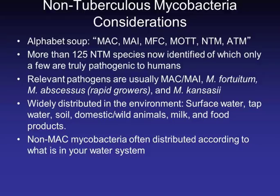The clinically relevant ones are particularly MAC or MAI, the rapid growers — which include Mycobacterium fortuitum and abscessus — and M. kansasii. These organisms are widely distributed in the environment, chiefly in water-rich environments. Where non-MAC mycobacteria are distributed is often according to what's in your water system, which is very important in this category of organisms.